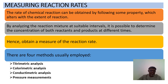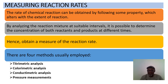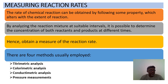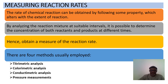There are four commonly used elementary methods: titrometric analysis (titration, like finding the equivalence point in the lab), colorimetric analysis using a colorimeter to track color changes proportional to concentration, conductivity metric analysis using a conductivity meter, and pressure measurements for gaseous reactants.